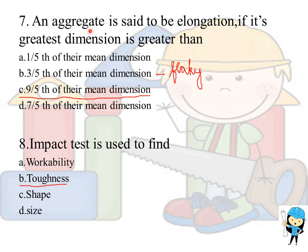An aggregate is said to be elongated if its greatest dimension is greater than 9/5 of its mean dimension. For flakiness, the least dimension should be less than 3/5 of its mean dimension.